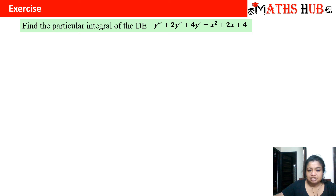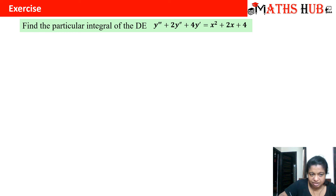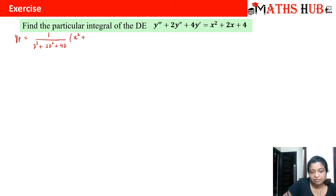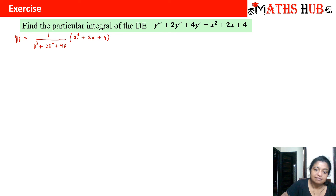We need to find the particular integral of y''' + 2y'' + 4y' = x² + 2x + 4. Converting to operator notation: yp = 1/(D³ + 2D² + 4D) · (x² + 2x + 4). The maximum power is 2, so we need to expand only up to the second derivative; third-derivative terms onwards become 0.